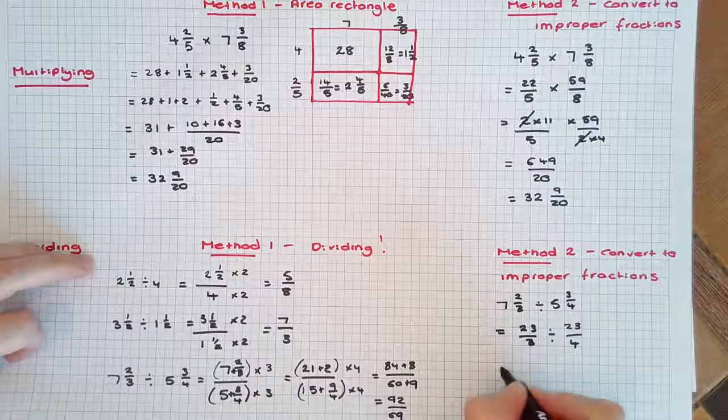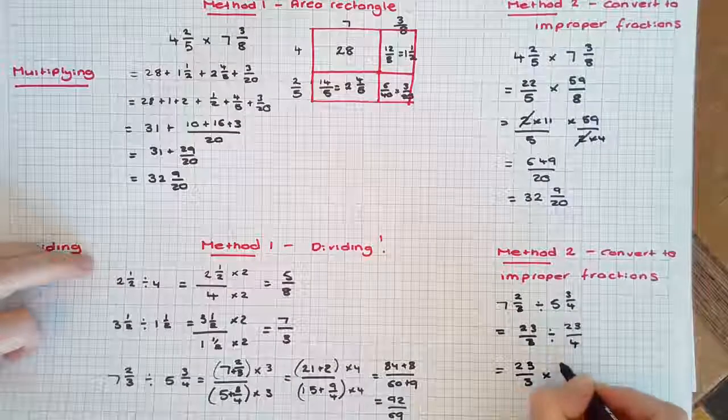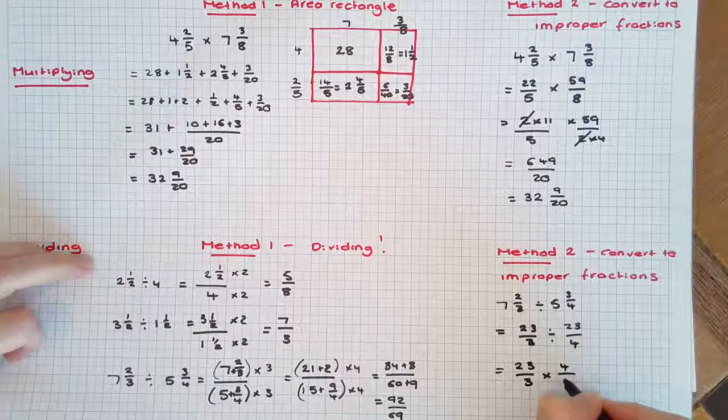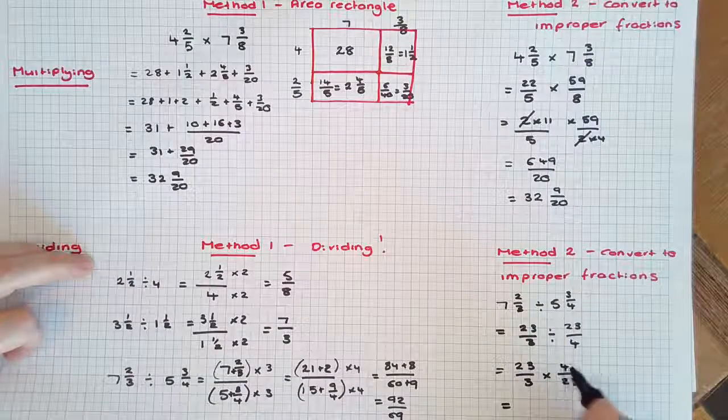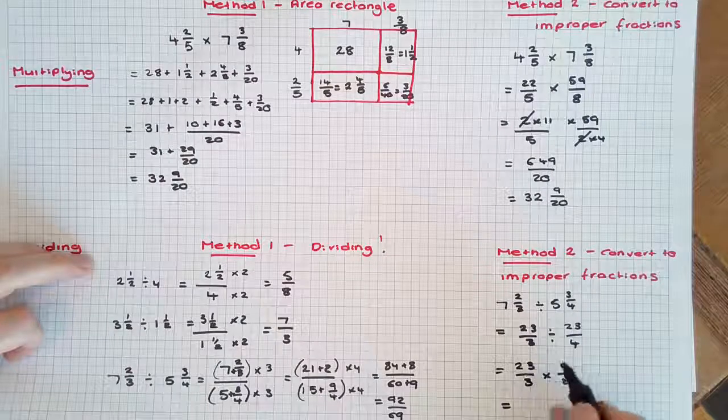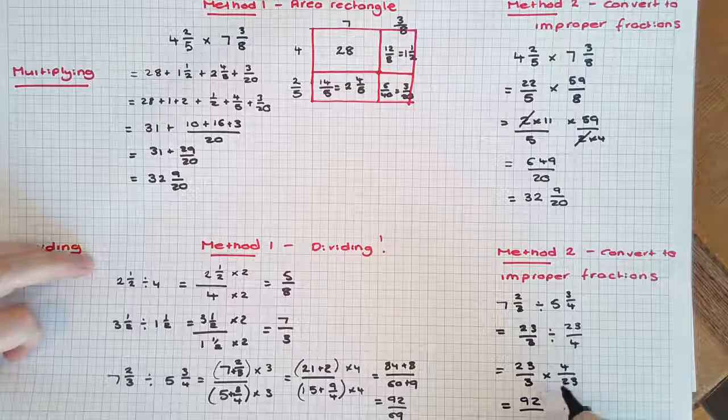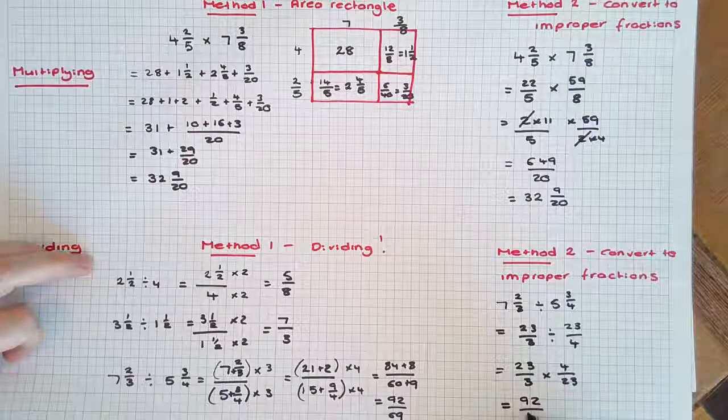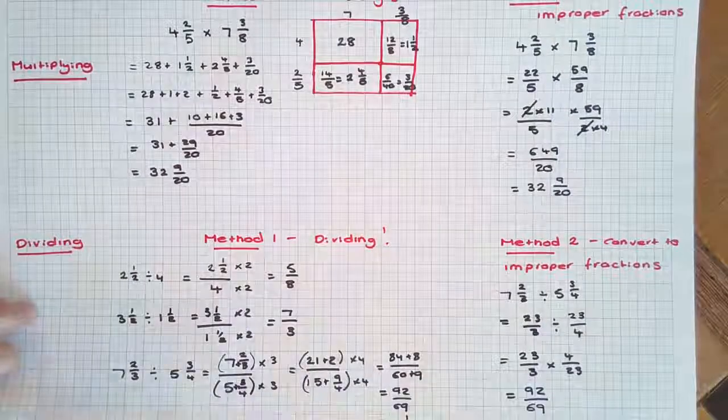by the reciprocal and expand that out: 23 times 4 is 92 over 23 times 3. You could leave it as an improper fraction or put it back to a mixed numeral.